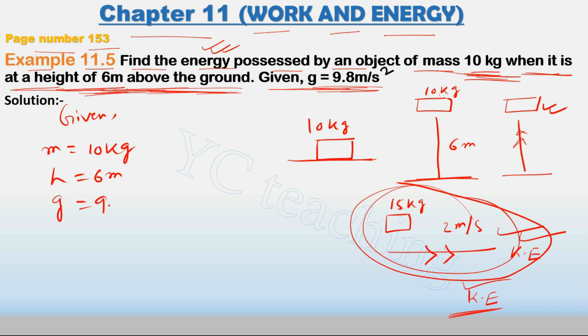g is acceleration due to gravity. Now we are going to find potential energy. So potential energy, that is EP, is equal to mgh. What is our m? m is equal to 10. What is our g? g is equal to 9.8. What is our h? h is equal to 6.